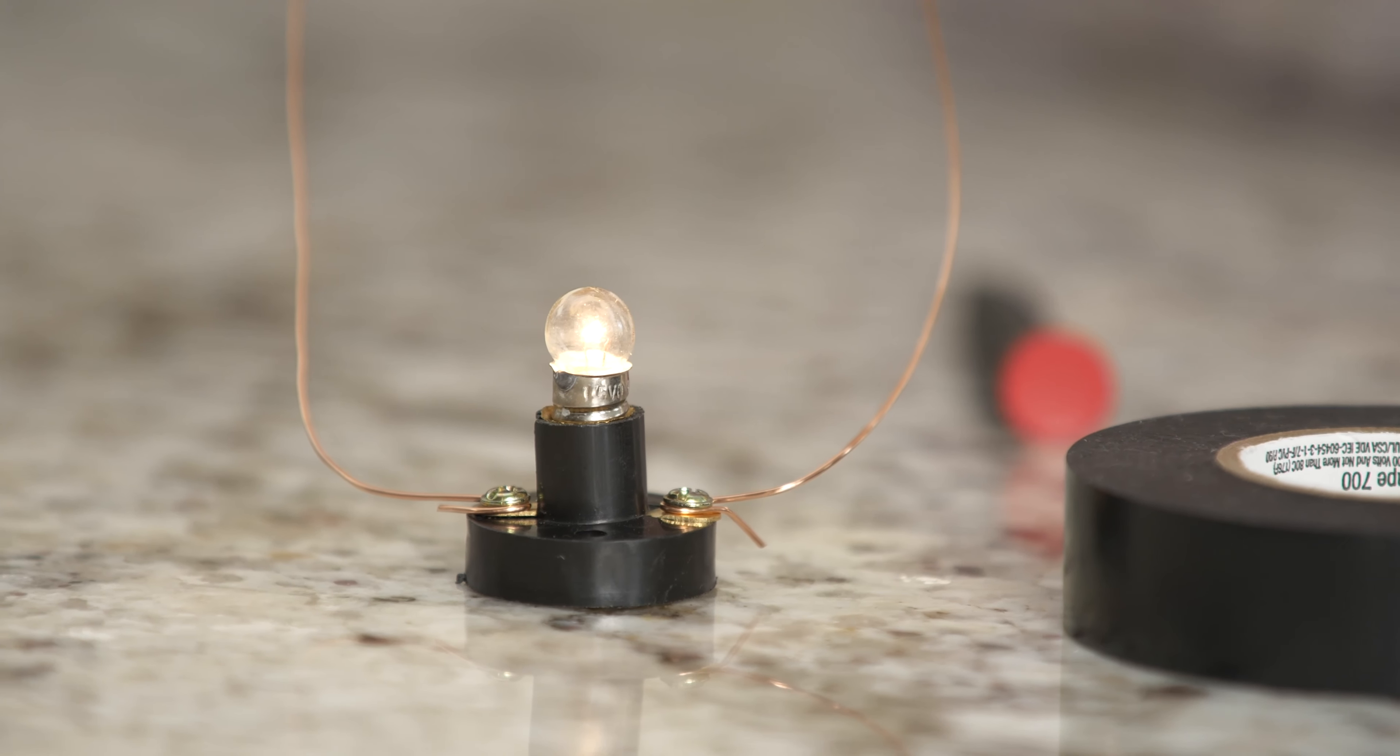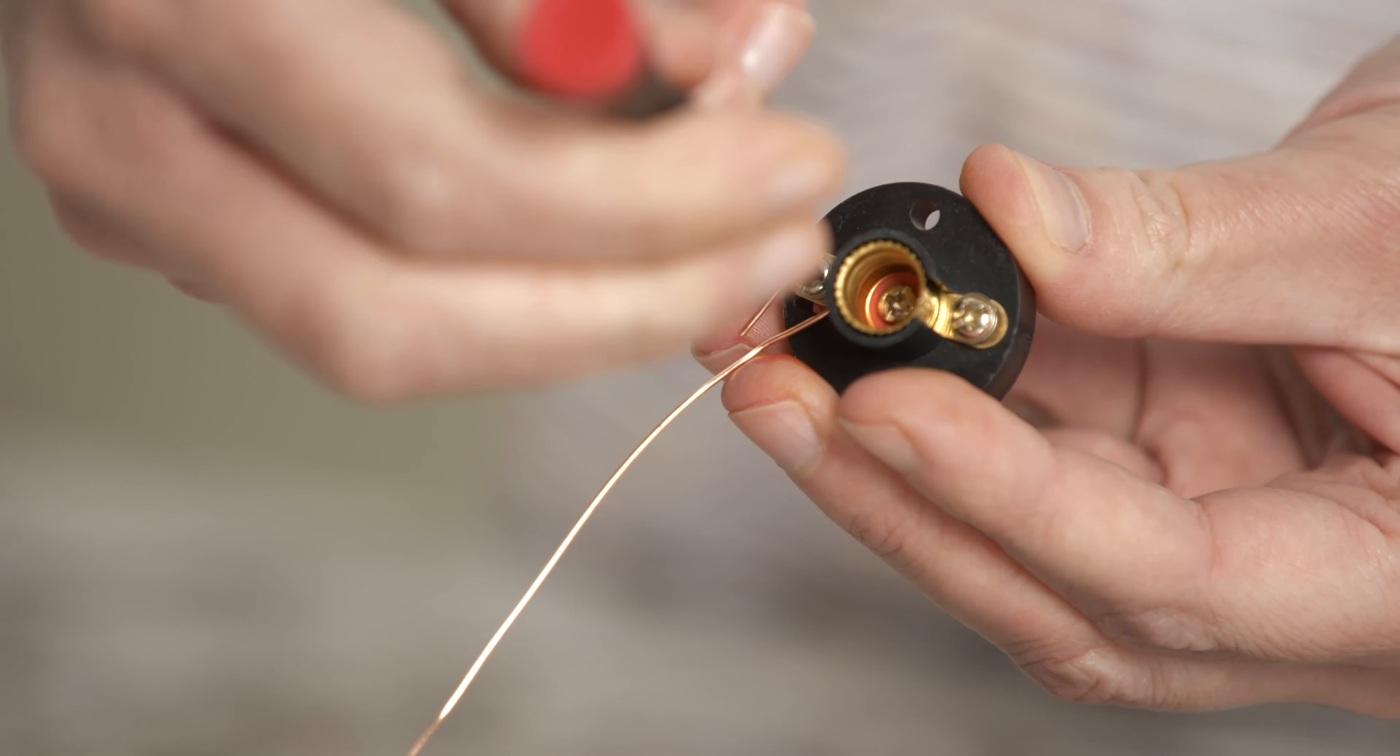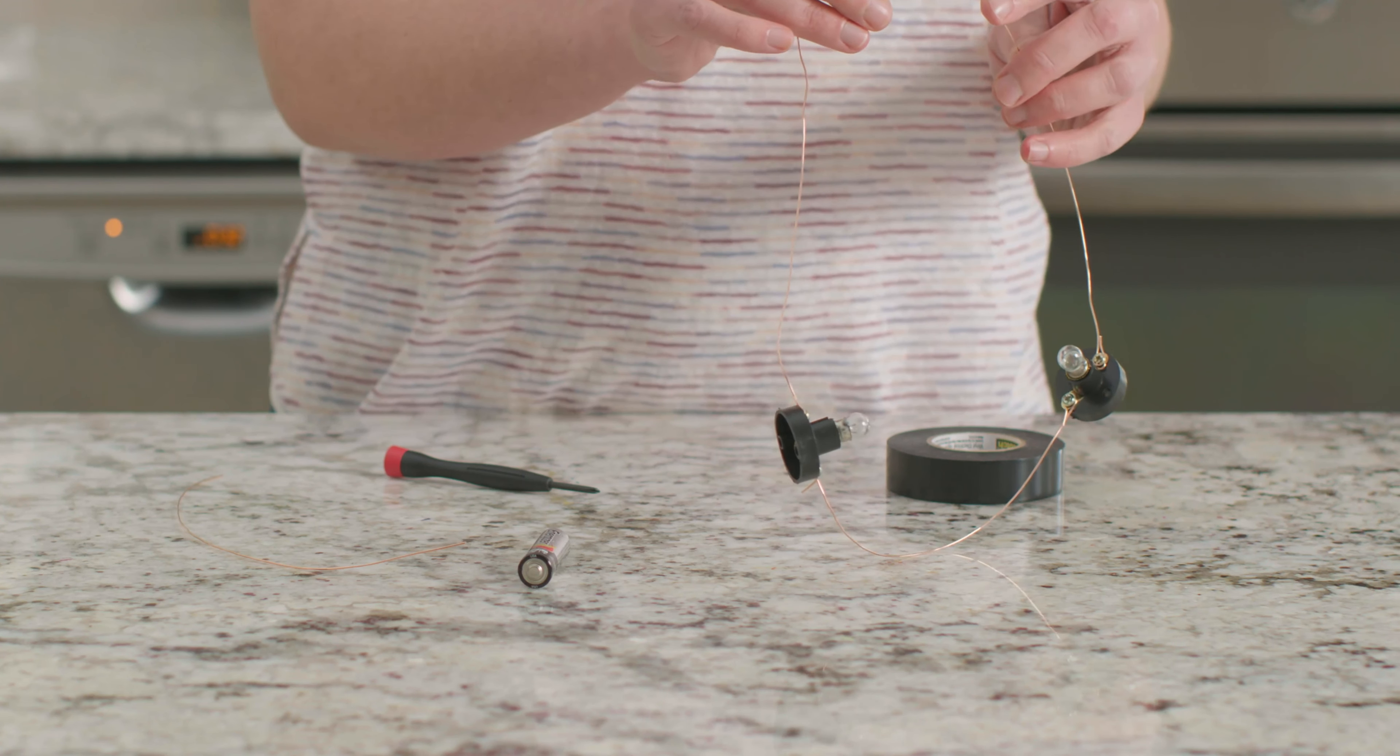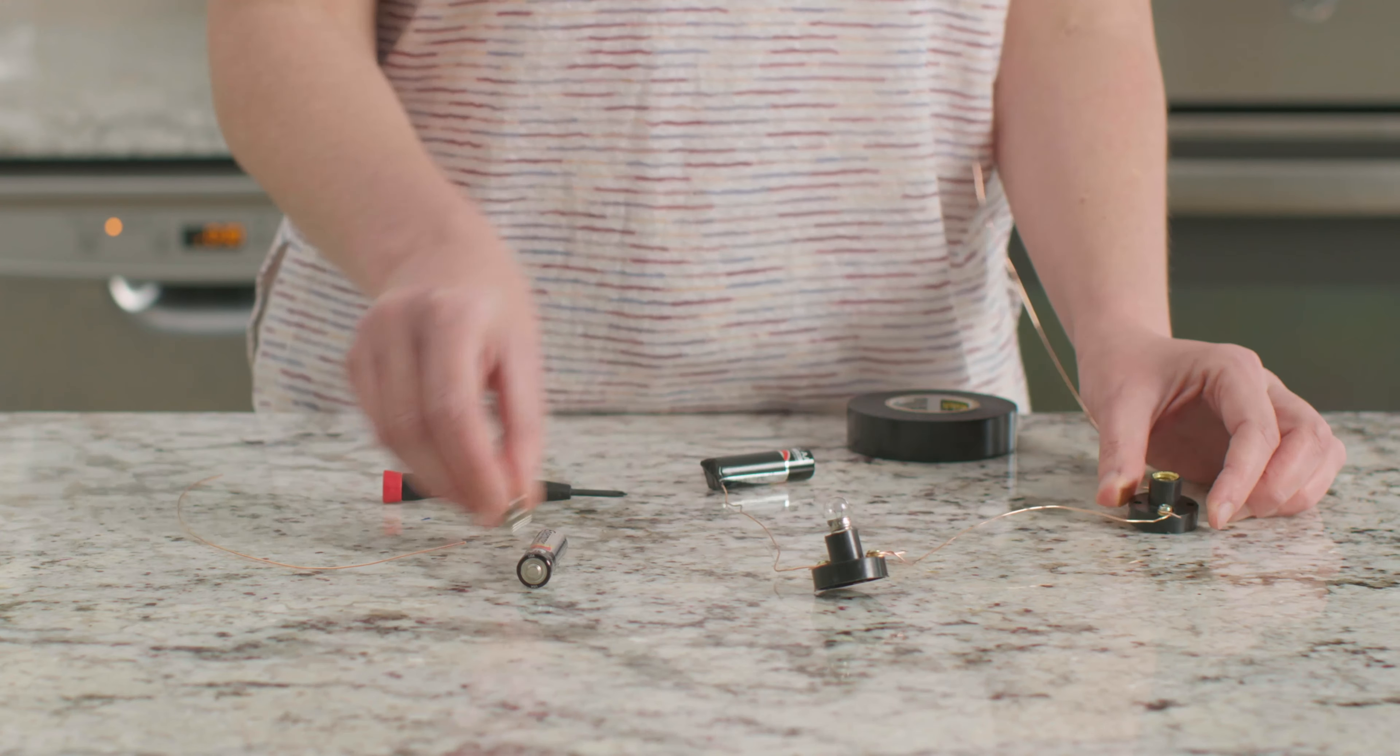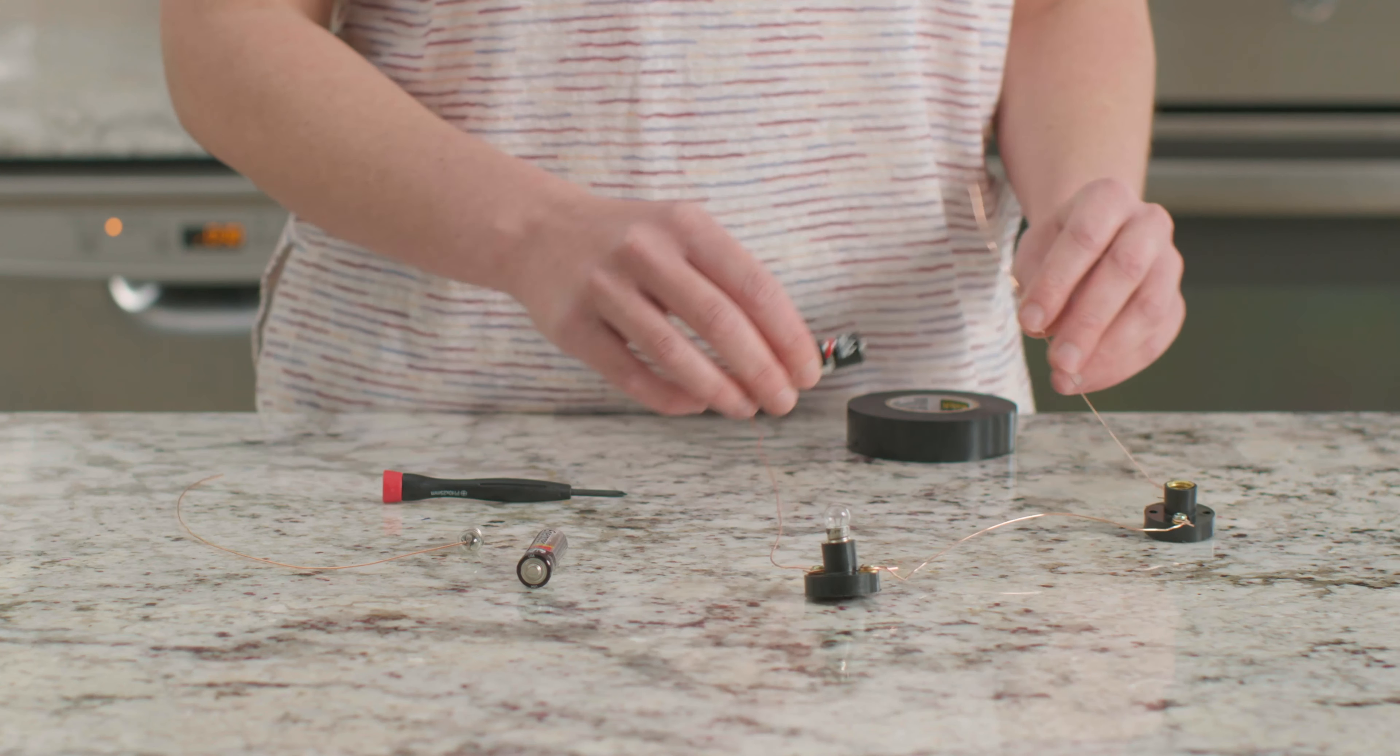Now let's add another light bulb to our circuit. Let's attach our loose wire end here to the terminal on the bulb holder. Now we can attach another piece of wire to the other terminal and then touch the loose end to the positive terminal of our battery again. What happens to the lights? Are they brighter or dimmer? Let's try unscrewing one of the bulbs. What happens now? When this bulb is unscrewed there is no way to complete our circuit.